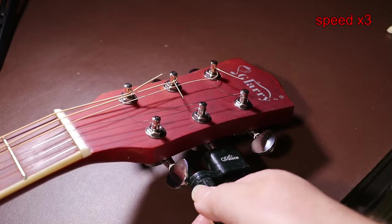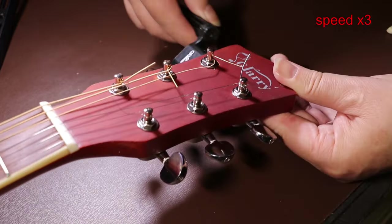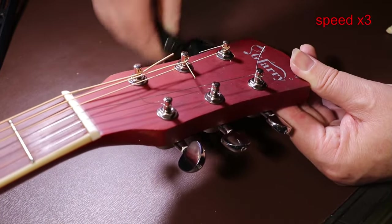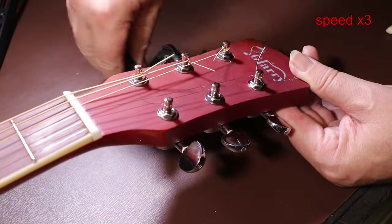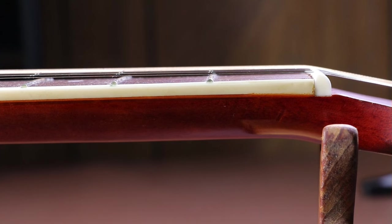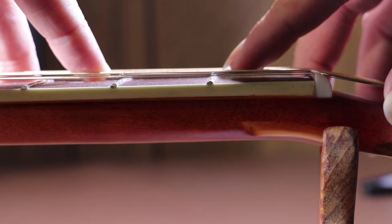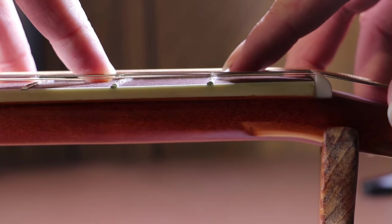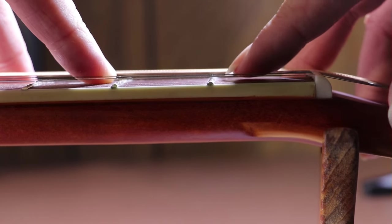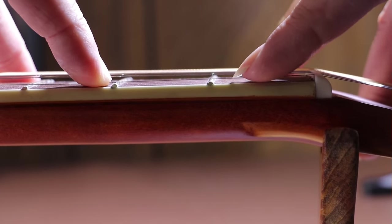Before I test the action with all the strings on, I need to tune the guitar up, and this is so the strings are at the correct tension, and that way, I'll get a more accurate idea of how high the action is. Now I've put all the strings on, I'm going to put my finger back on the third fret, and then push down the string to touch the first fret, so I can see what the gap's like between each of the strings and the fret.